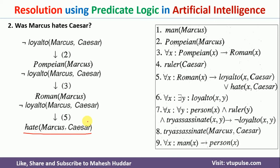In this video, I discussed how, given a set of logical statements, we can prove statements like whether Marcus hates Caesar or not. In practice, we are given facts that must first be converted into logical statements before proving. How to convert facts into logical statements is already discussed in a previous video — the link is in the description below. I hope the concept is clear. If you like the video, do like and share with your friends. Press the subscribe button and the bell icon for regular updates. Thank you.